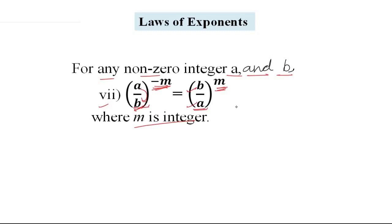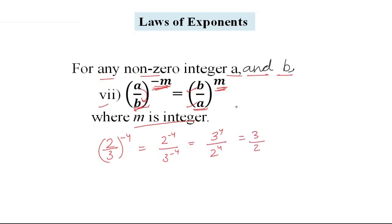But how do we explain this? Let's explain. Take the example: 2 upon 3 whole raise to the power negative 4. If we don't apply the law, we write 2 raise to the power negative 4 upon 3 raise to the power negative 4. Then we write the exponents in positive form: 3 raise to the power 4 upon 2 raise to the power 4, which we can write as 3 upon 2 whole raise to the power 4, because the exponent is the same.